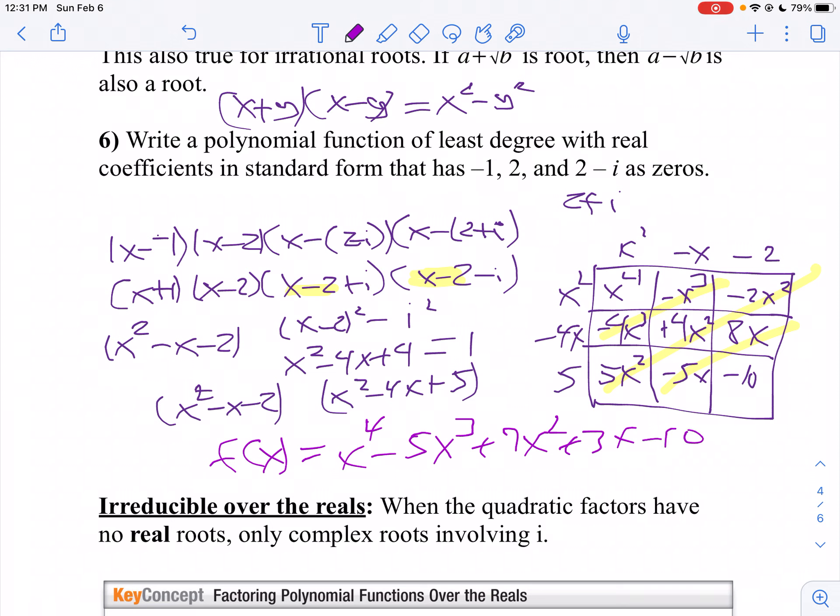There is your polynomial with roots of negative one, two, and two minus i. It also has to have two plus i. That's the one with the least degree, and it has a leading coefficient of one. If I said write a polynomial with a leading coefficient of five, then I would multiply everything by five.